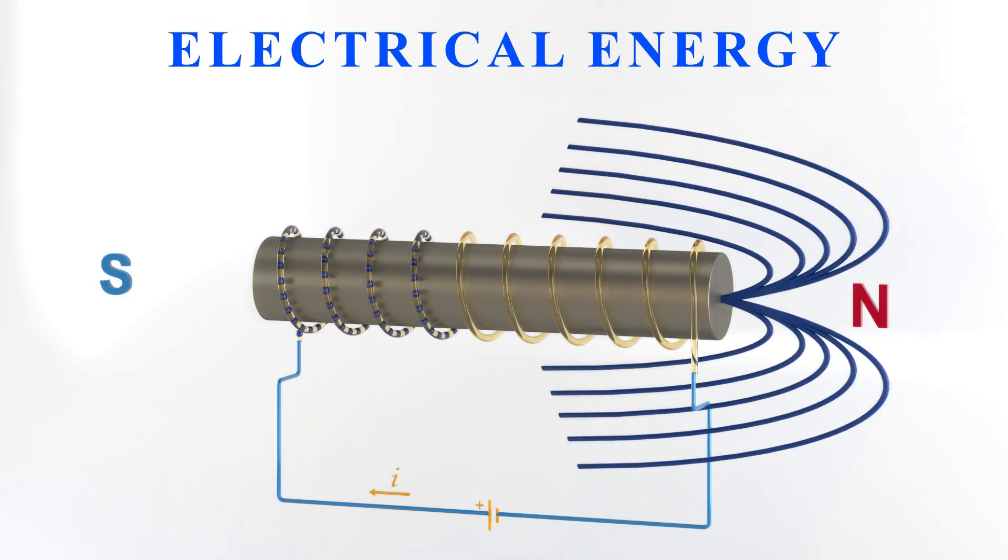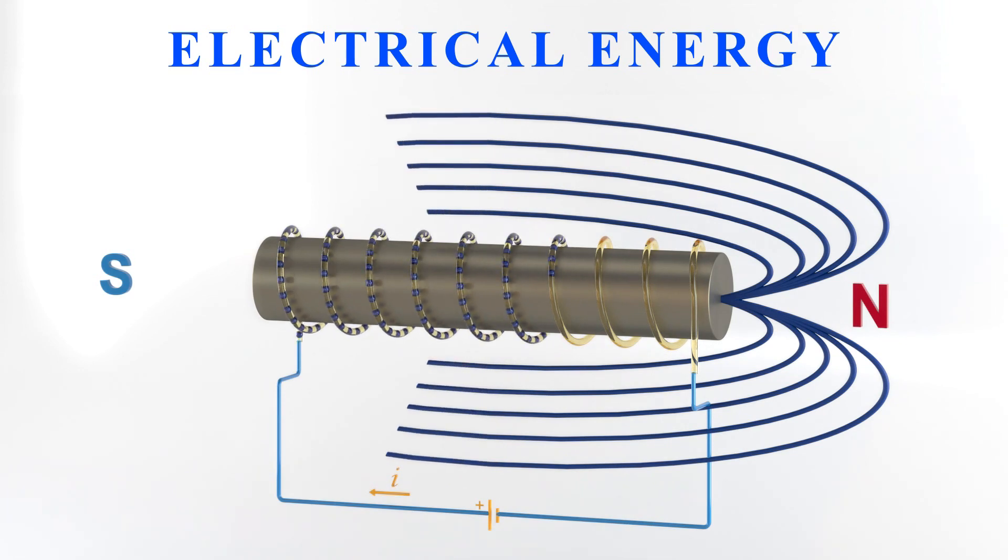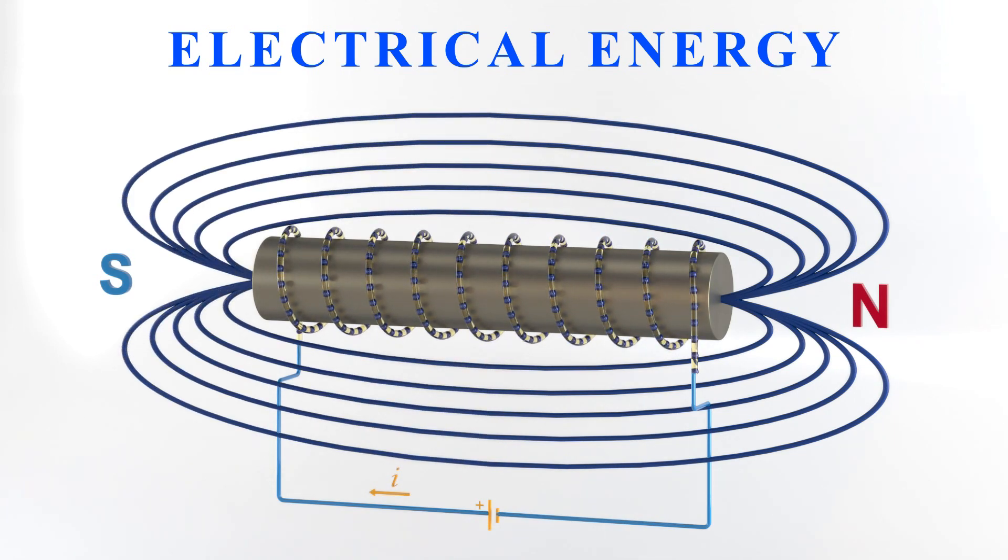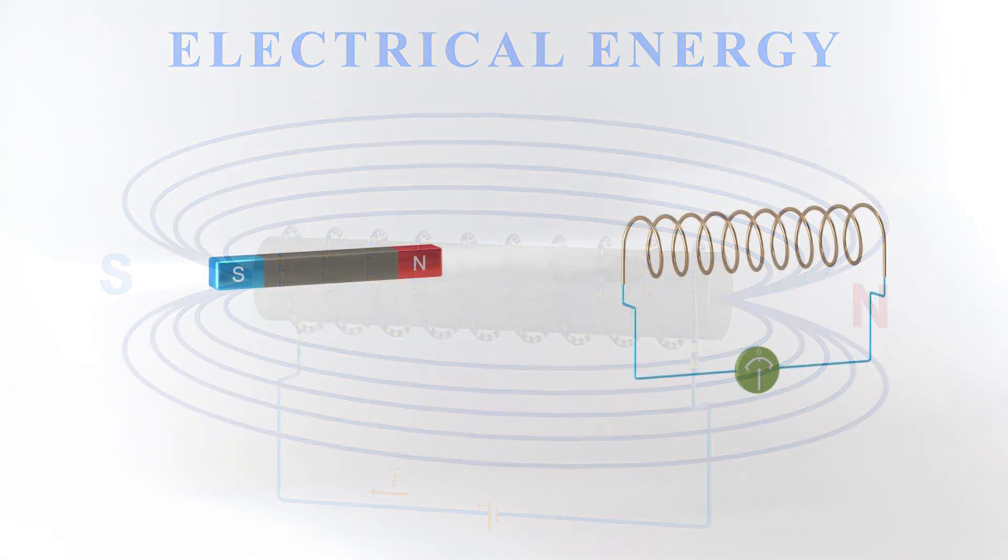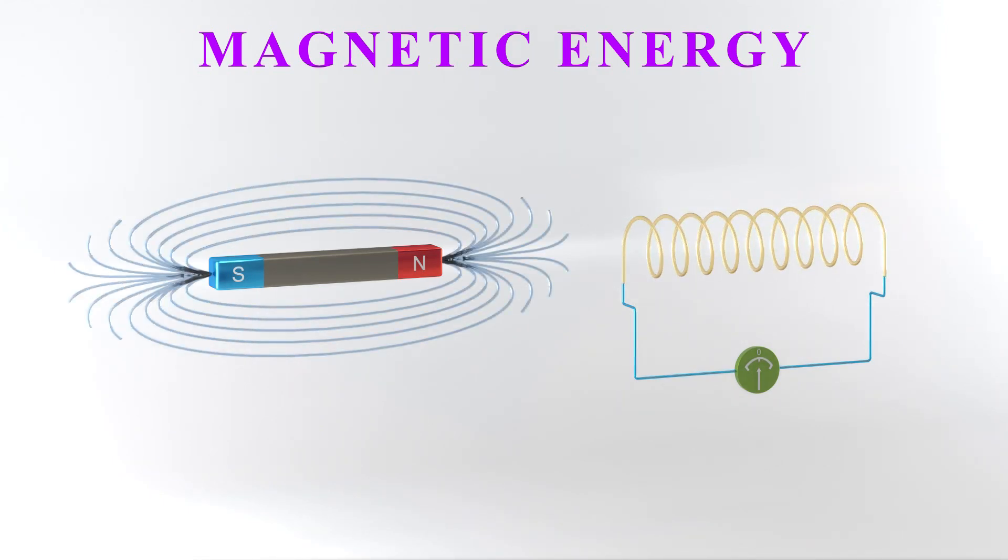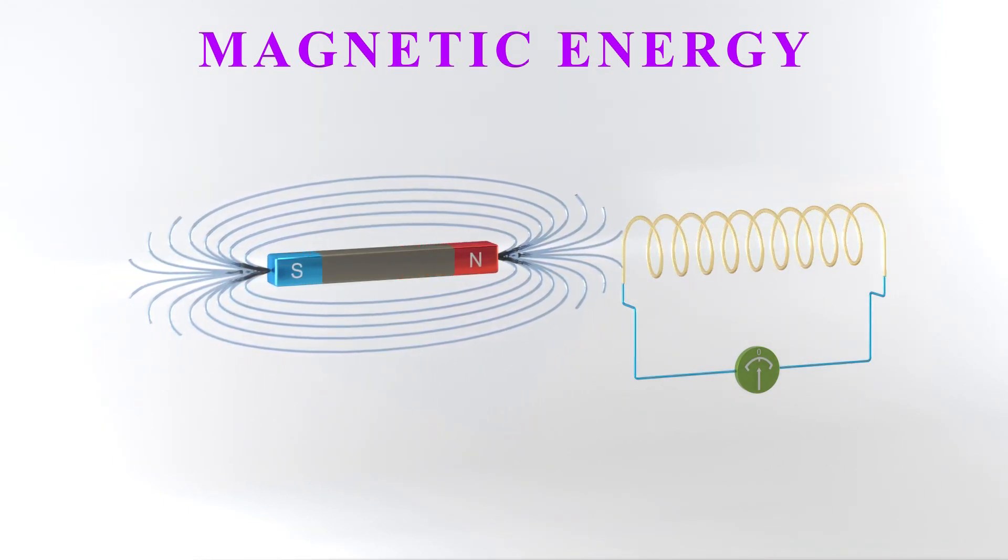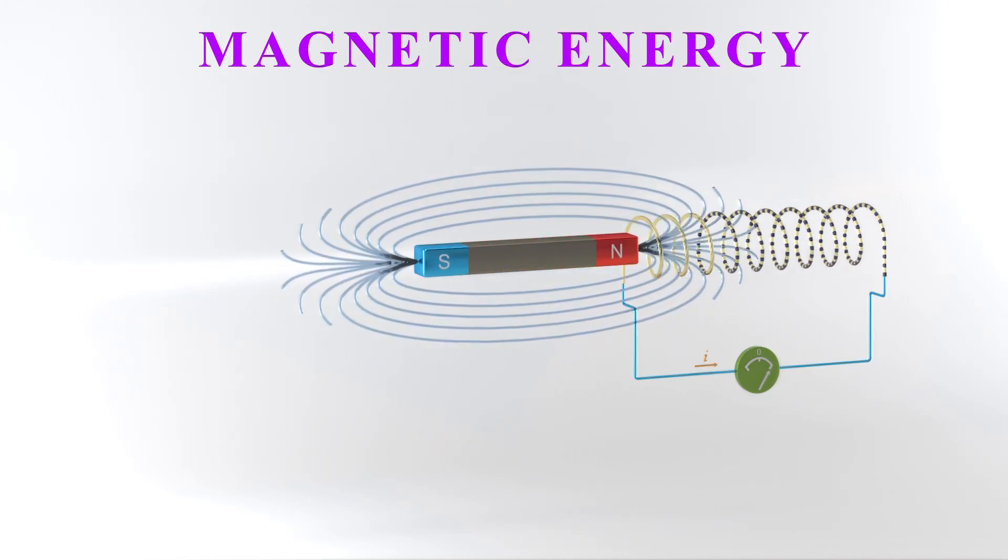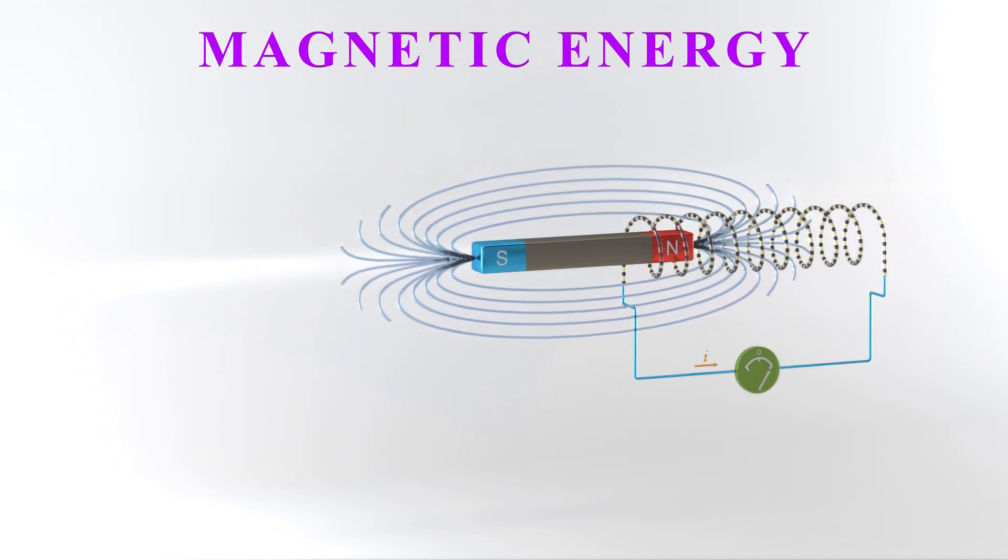As is well known, the flow of electrons or, in other words, the electric current can create magnetic fields in this solenoid. Magnetic fields can cause electrons to flow through solenoid and produce electric current too.